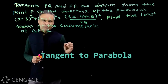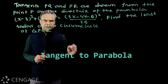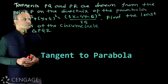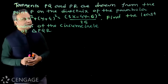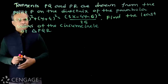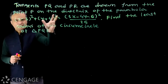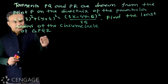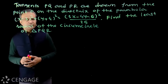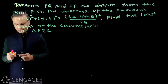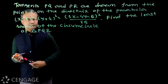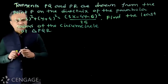Here we have a very nice conceptual equation. The question is: tangents PQ and PR are drawn from the point P on the directrix of the parabola. Then find the least radius of the circumcircle of triangle PQR. We have this equation of parabola.